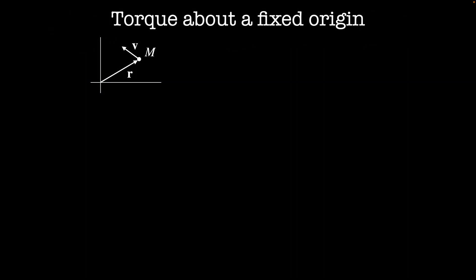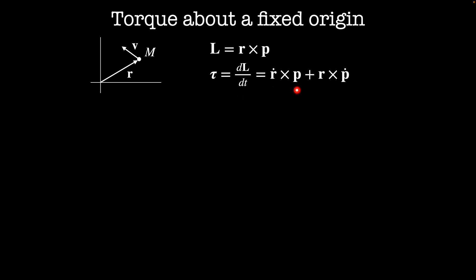The angular version of Newton's first law says angular momentum is conserved unless an external torque is applied. For a point-like particle of mass m traveling at velocity v at distance r from the origin, the angular momentum is r cross p. The applied torque is the rate of change of angular momentum dL/dt, which by the product rule gives r-dot cross p plus r cross p-dot. The first term vanishes because r-dot is parallel to p, so the torque equals r cross the applied force.